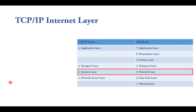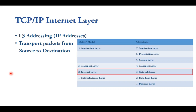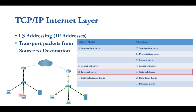The internet layer in the TCP/IP model is the same as the network layer in the OSI model. We say Layer 3 addressing according to the OSI model because here it's number three — the network layer. It is where we have the IP addresses, and its responsibility is for transporting packets from the source to the destination, from a network over the internet to another network.